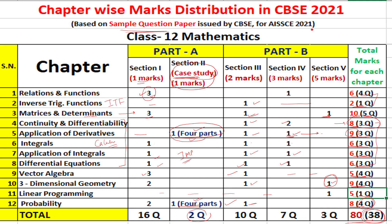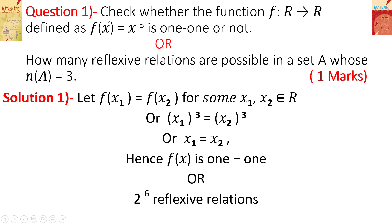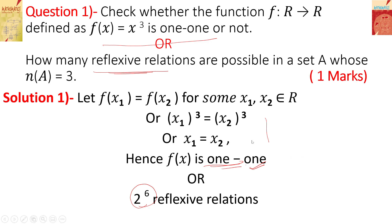This preparation is based on the latest sample paper issued by CBSE. Looking at Section A of the paper, for example: one question checks whether the function f(x) = x³ is one-one, and another asks how many reflexive relations are possible in a set. You can solve these easily. I will provide video solutions of each and every question — regularly watch my channel.